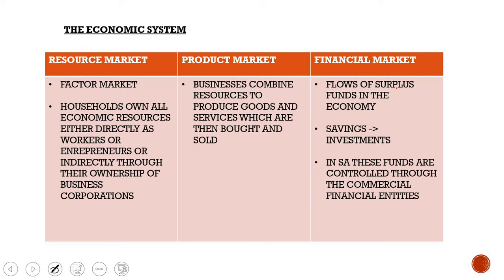The financial market is the flow of surplus funds in the economy — savings becomes investments. When people save their money in banks, the banks use that money to give out loans to people who want to start up businesses, and that's how it becomes an investment. In South Africa, these funds are managed through commercial financial entities; for example, FNB is controlled by the Reserve Bank.